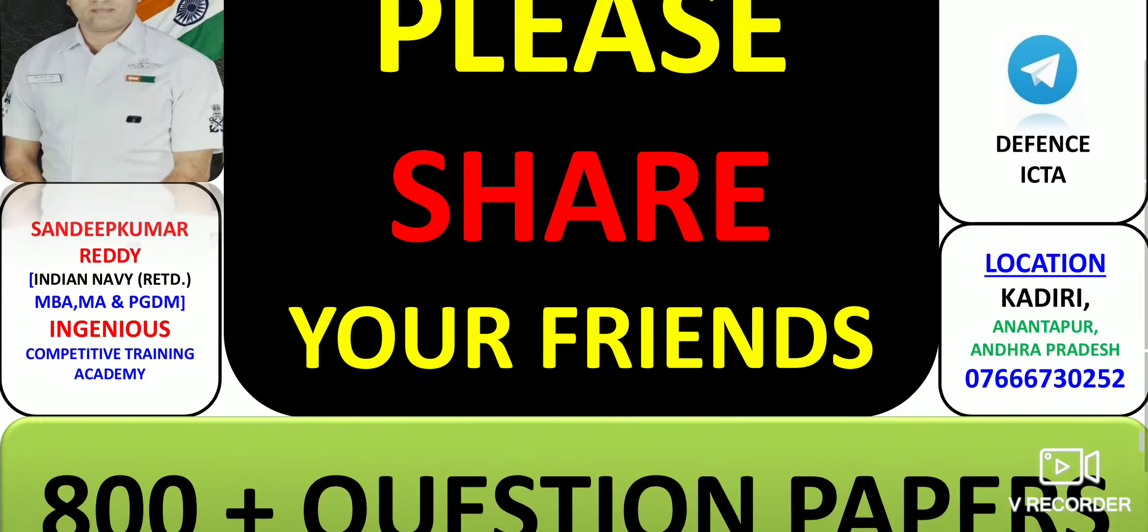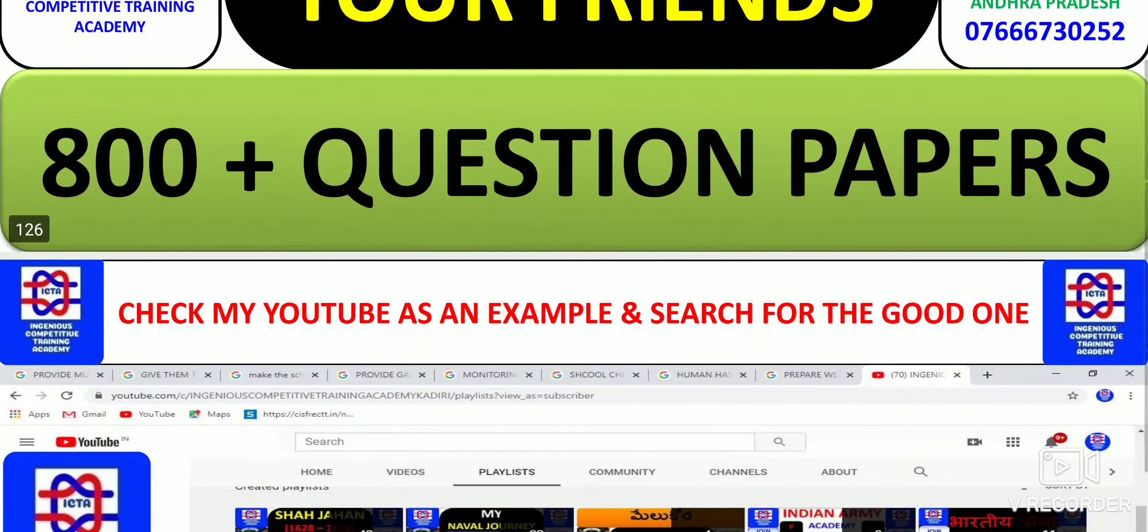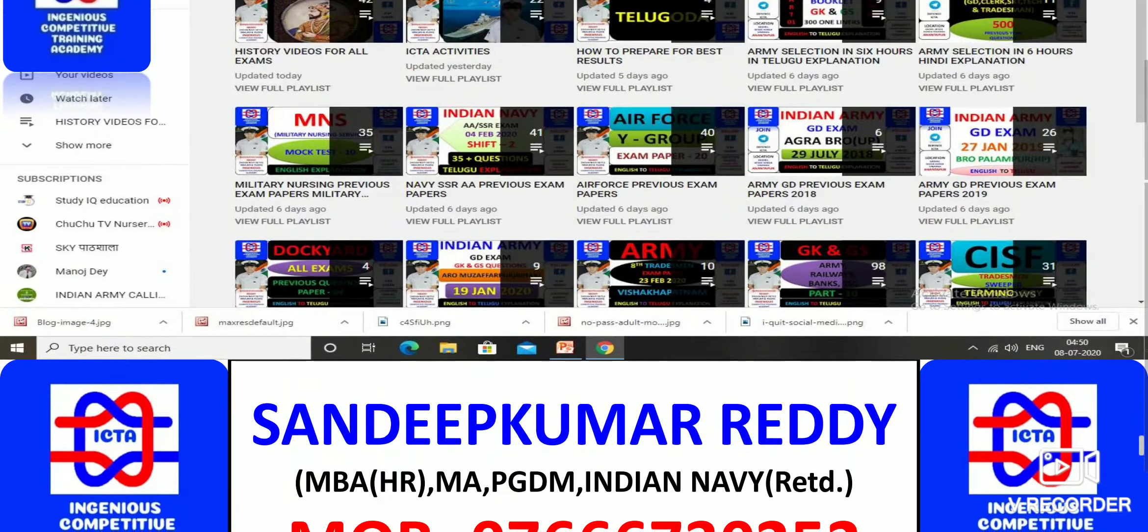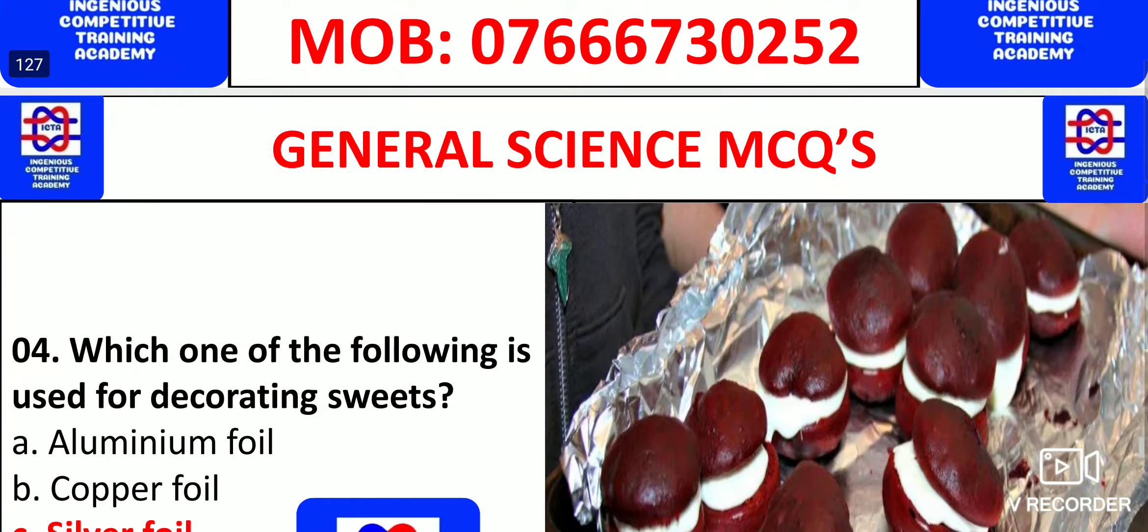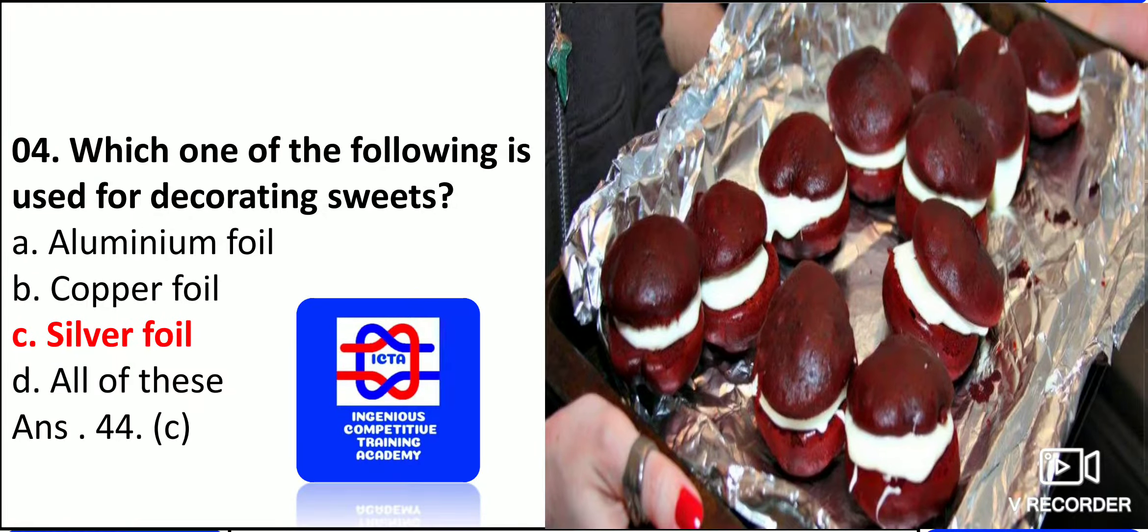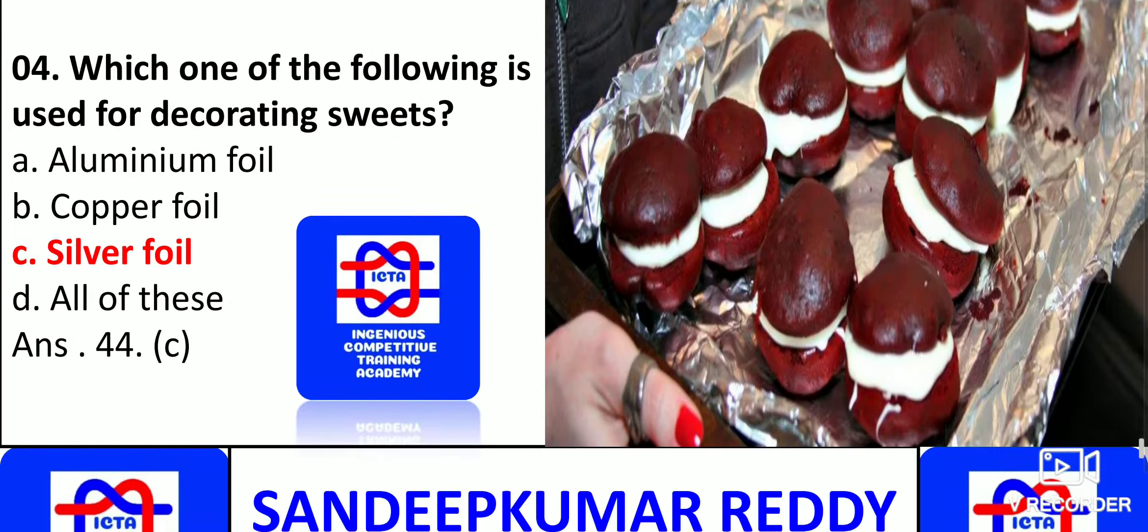I request you guys to check the playlist. You will have more than 800 plus question papers for various examinations that can be useful for you. Which one of the following is used for decorating sweets? For the decoration of sweets, silver foil is used for the benefit of the freshness of the sweets.